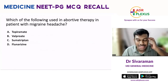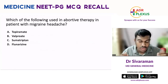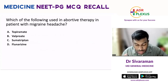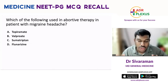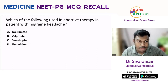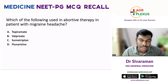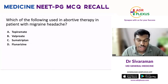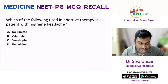A question was asked in your exam: which of the following is used in abortive therapy in a patient with migraine headache? That is, when a patient comes with an acute headache correlating with migraine, what is the acute treatment you are going to give? The options were topiramate, valproate, sumatriptan, and flunarizine.